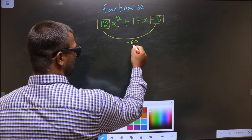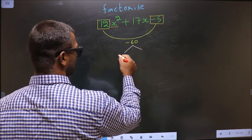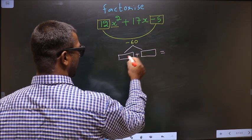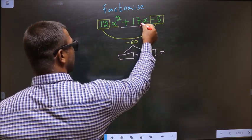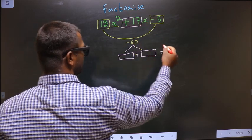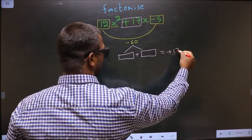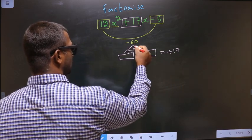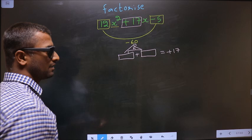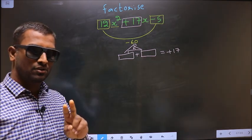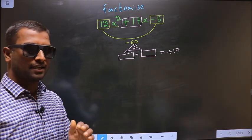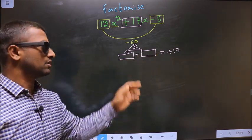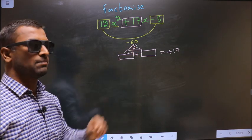Now you should look out for two numbers such that when you add these two numbers you should get the middle coefficient, that is plus 17, and also when you multiply you should get minus 60.